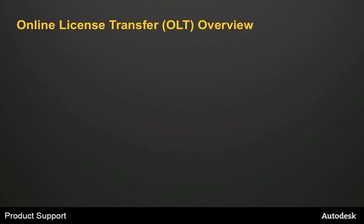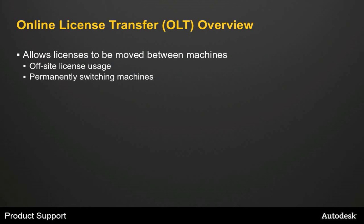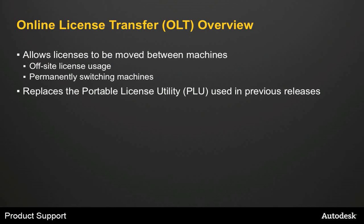Online License Transfer, or OLT, is a new technology that we added to the 2010 products. Although you'll see me using AutoCAD 2010 in this video, the same technology is in most if not all of the 2010 product releases, and so all of the concepts apply there as well. OLT allows licenses to be moved between machines. This is predominantly for off-site license usage — for example when you need to transfer a license to a portable laptop to take into the field, or when permanently switching machines. This replaces the portable license utility that we used in previous releases.